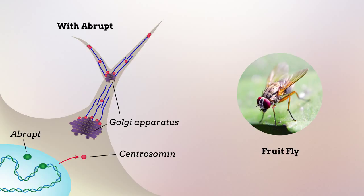In the presence of centrosomin and abrupt, new microtubules grew away from the Golgi apparatus in the same direction, preventing them from pushing outward into new dendrites.